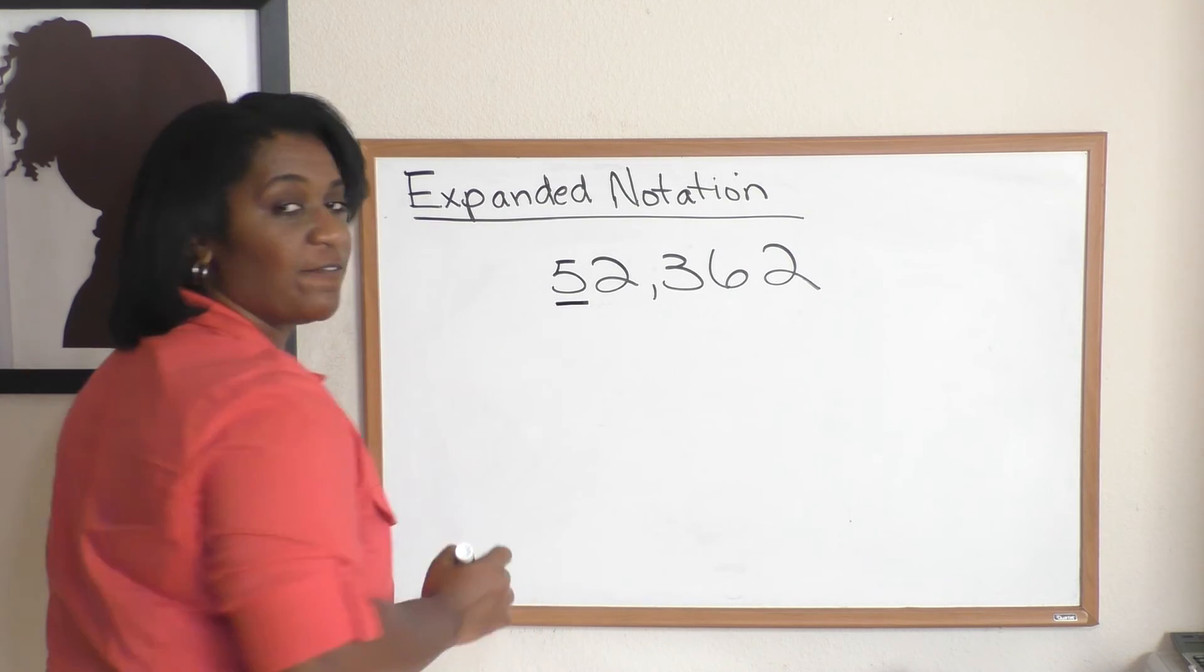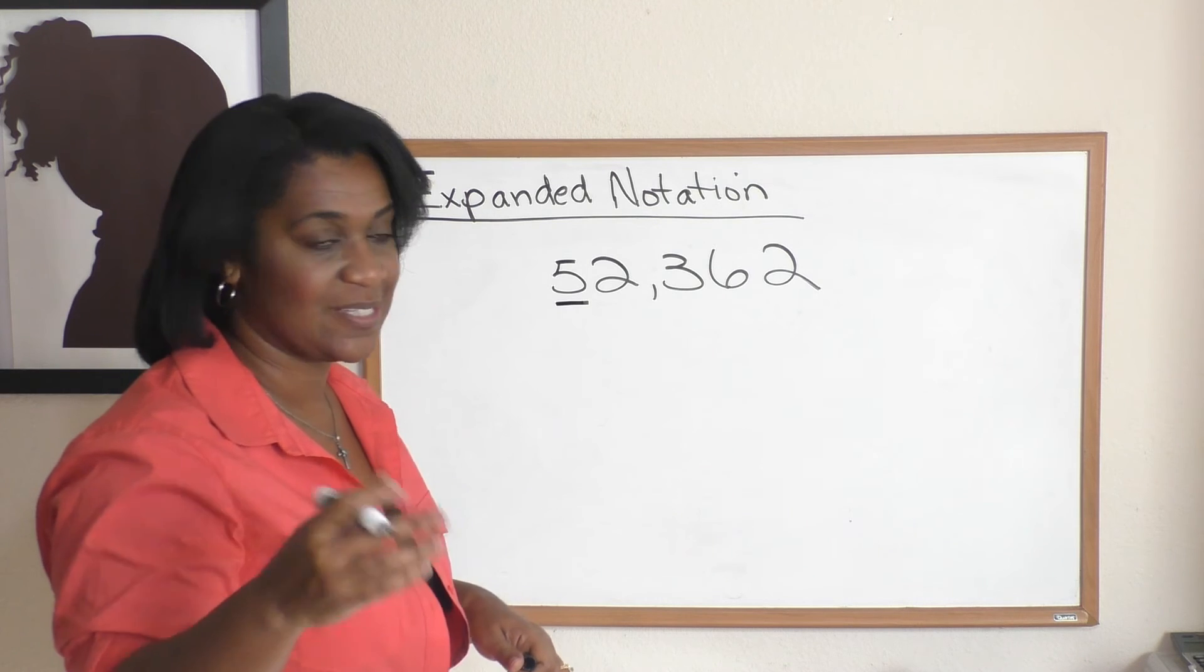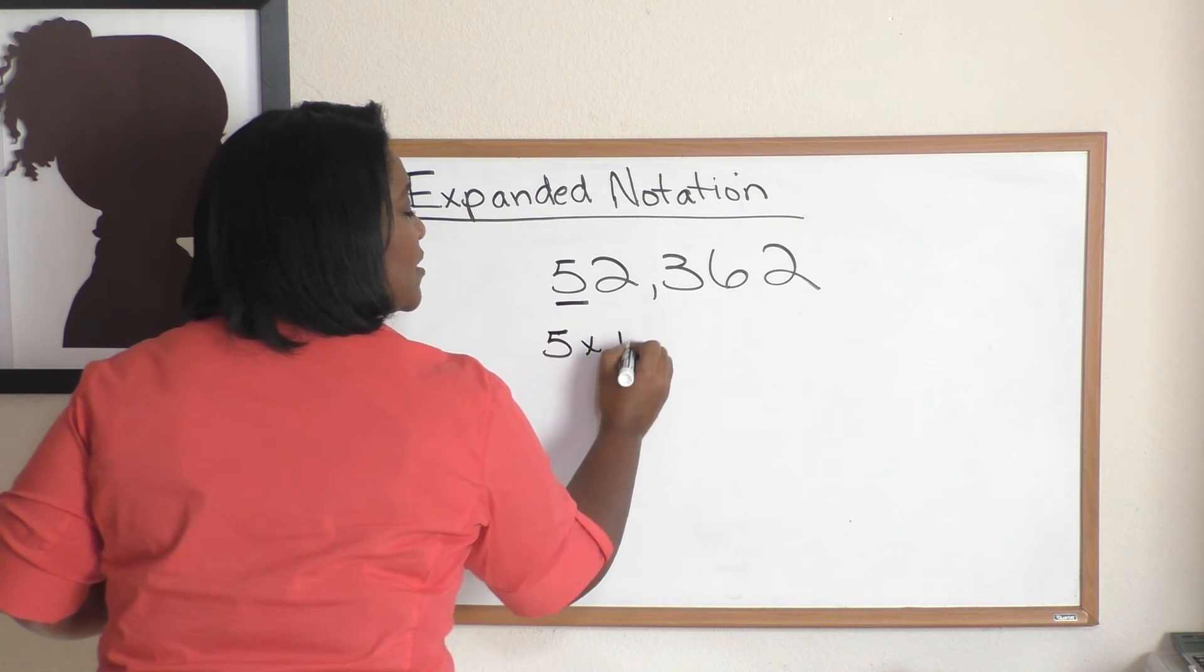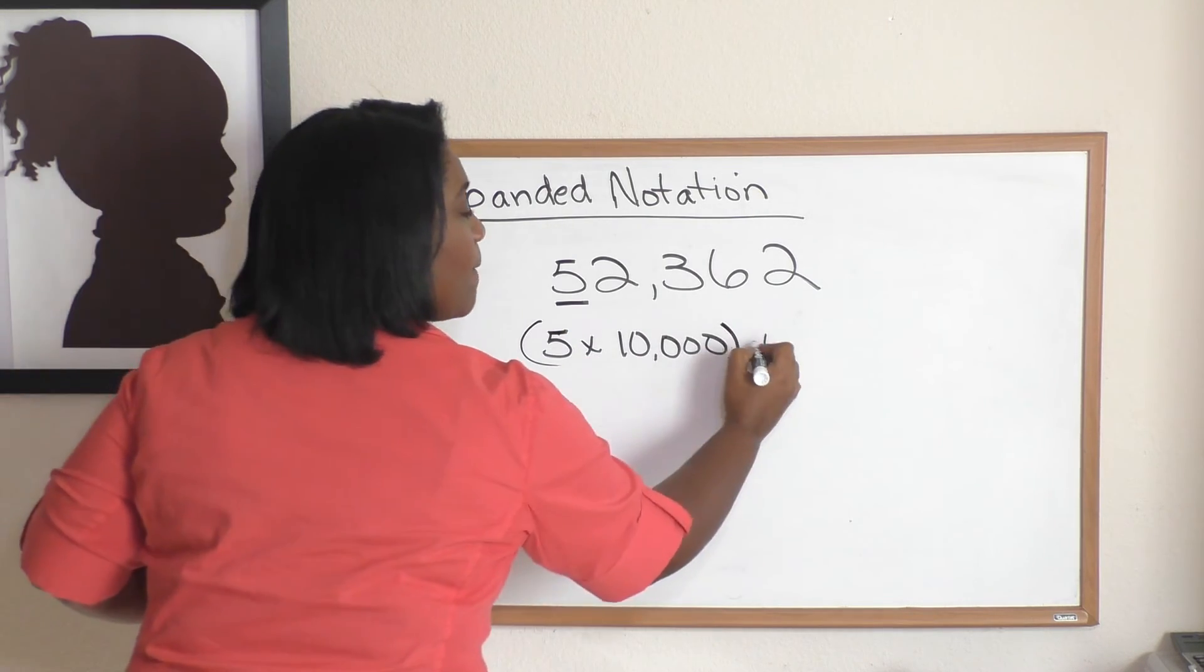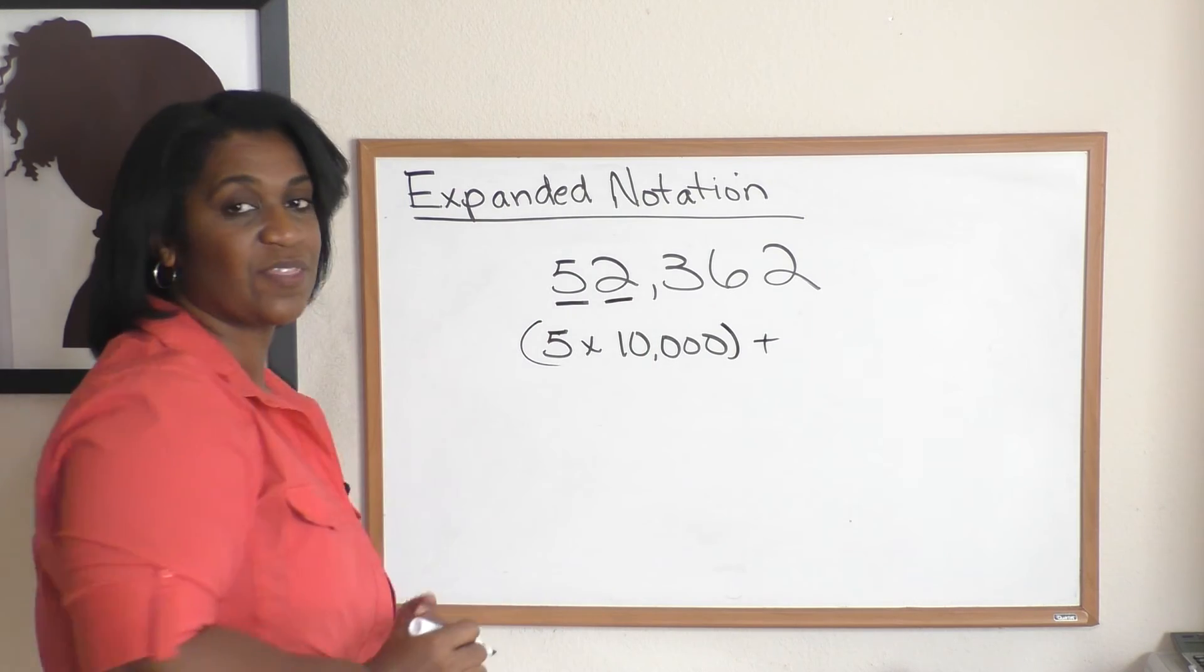The five is in which column? The ten thousands column. Good job. So we're going to do five times ten thousand. We put it in parentheses. Plus, keep moving. We're on to the two. The two is in the thousands place, so two times one thousand.